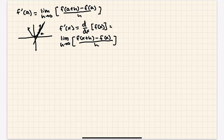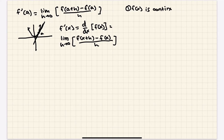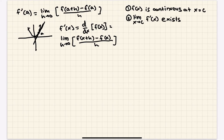Just like how continuity means the graph is continuous, a graph is differentiable if the derivative exists at a point. The criteria: first, f(x) must be continuous at c — requiring that three-step process from before. Second, the limit as x approaches c of f prime of x must exist. You find the derivative of the original function and check that the one-sided limits exist. If they do, the function is differentiable at that point.